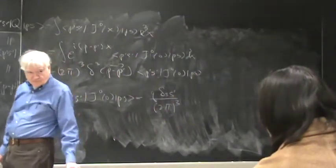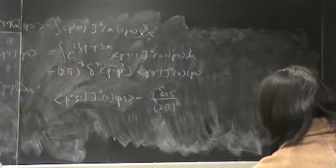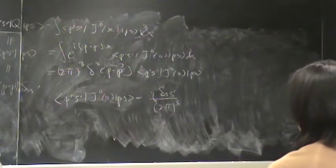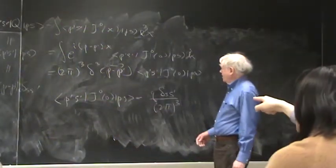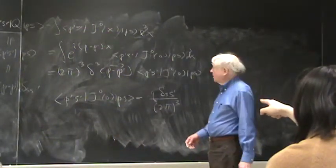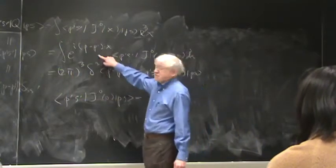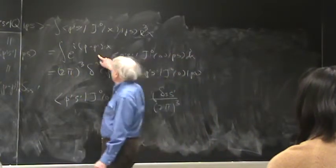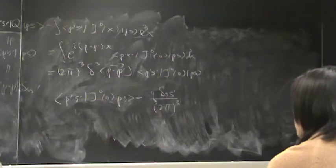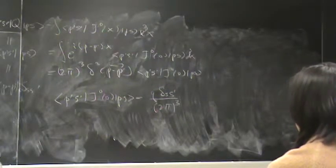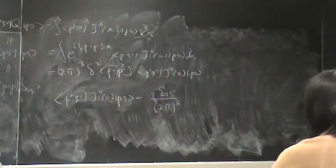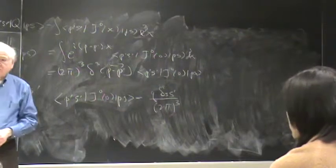Where does the exponential come from? This exponential came from over here — anything at x is always e to the minus i p·x, so that thing is e to the i p·x.